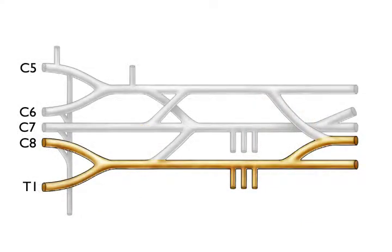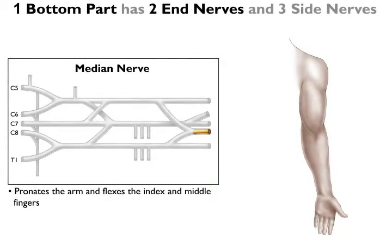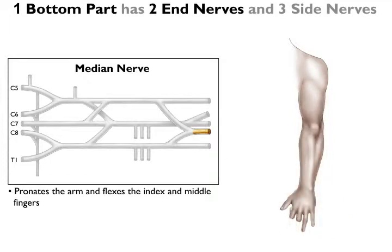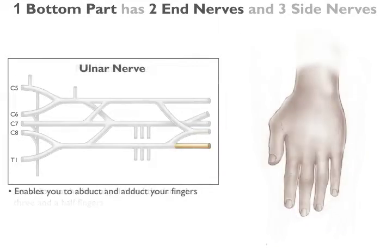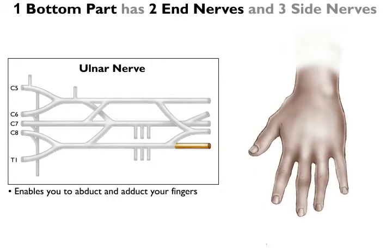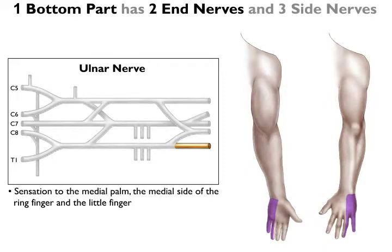Now, the bottom part of the brachial plexus. Of course, the 1 bottom part has 2 end nerves and 3 side nerves. The median nerve originates from the top and the bottom parts of the plexus. It controls the muscles that enable you to pronate your arm and to flex your index and middle fingers. It also provides sensation to the lateral palm and the lateral 3½ fingers. The ulnar nerve enables you to abduct and adduct your fingers, and also provides sensation for the rest of the palmar surface of the hand — that is, the medial palm, the medial side of the ring finger, and the little finger.